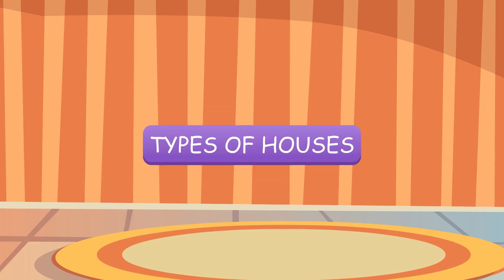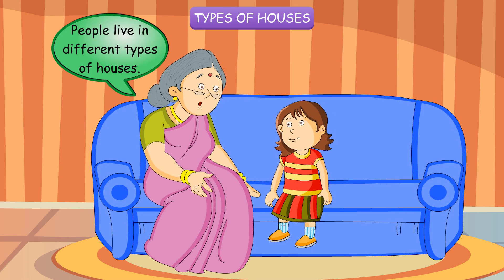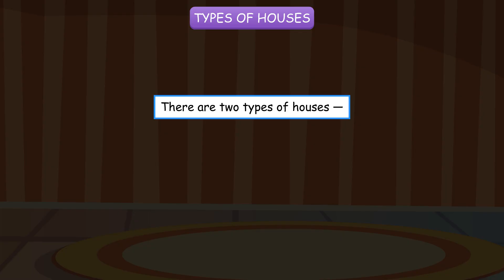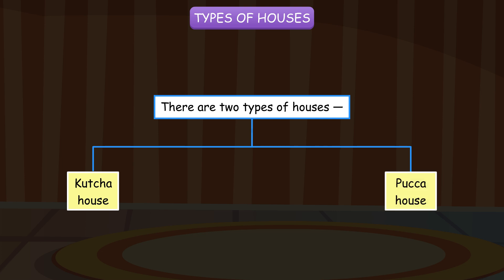Types of Houses. People live in different types of houses. There are two types of houses: Kacha House and Paka House.